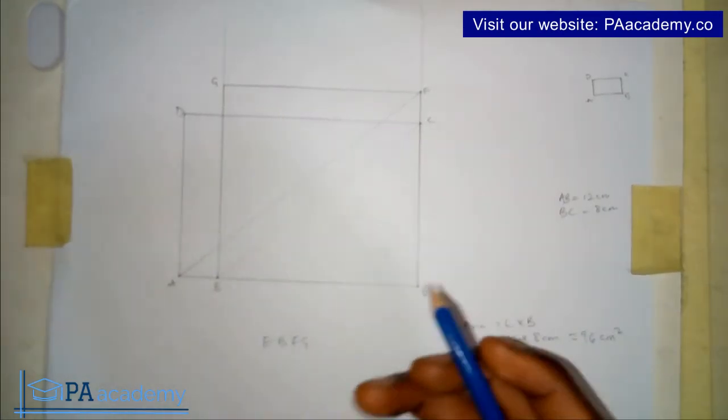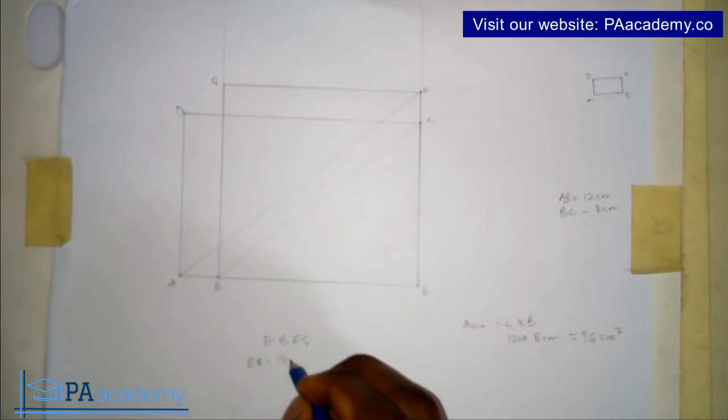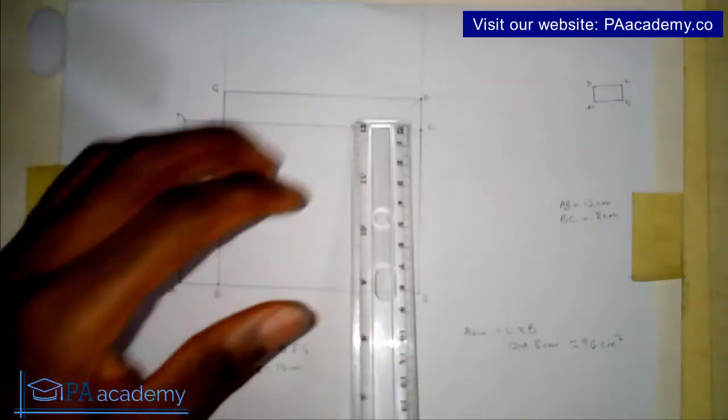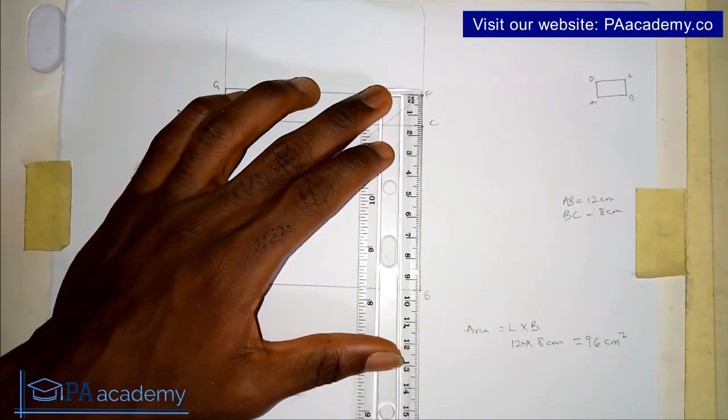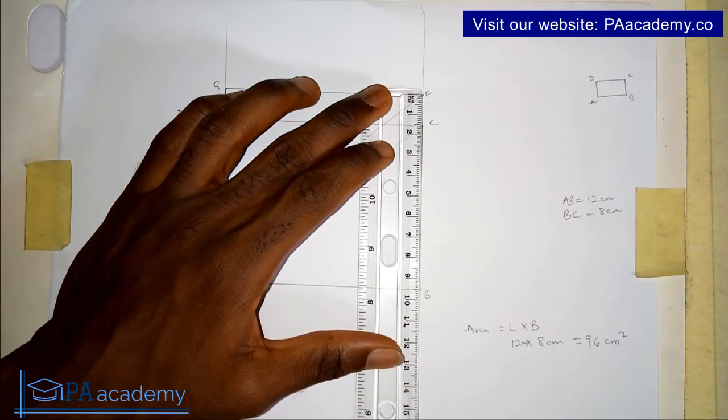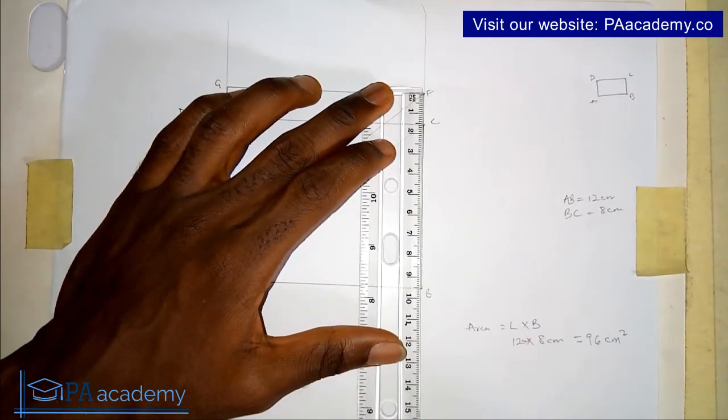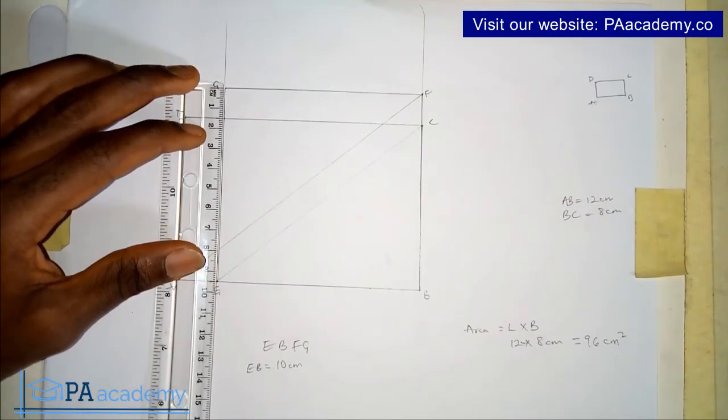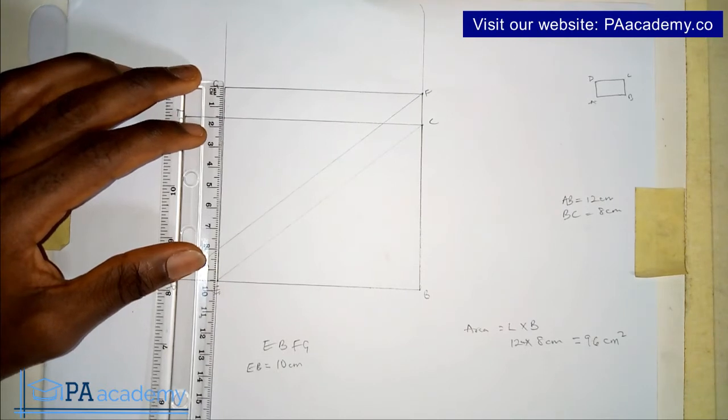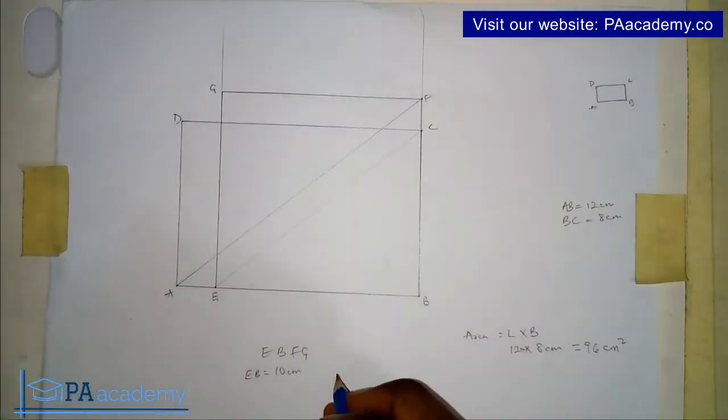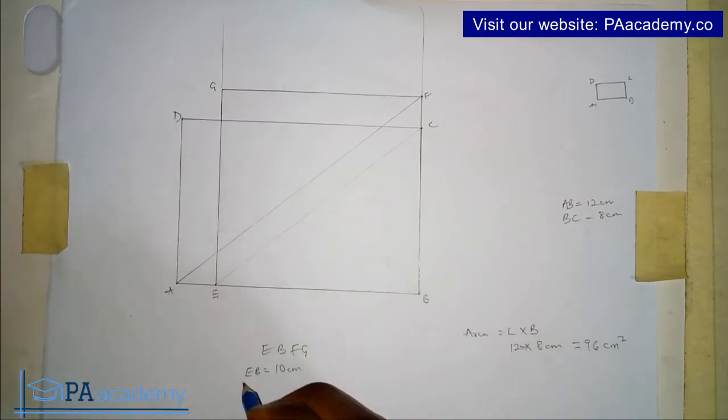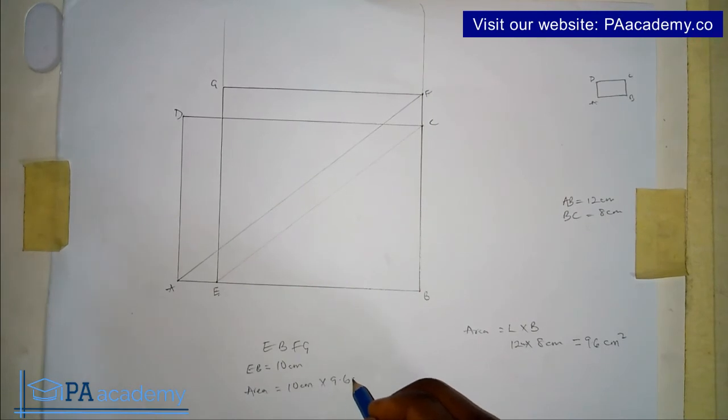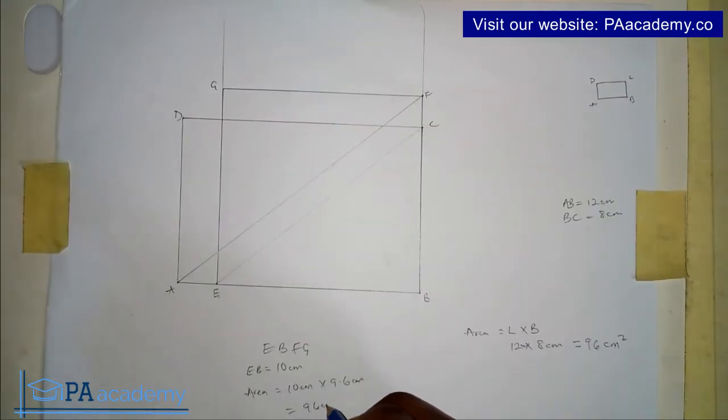So let's check that of F, B. So in measuring F, B, it will give us 9.6. So same as G, E, 9.6. So that will be 10 cm. So if I calculate the area, the area will be equal to 10 cm times 9.6 cm. And that will give us 96 cm².